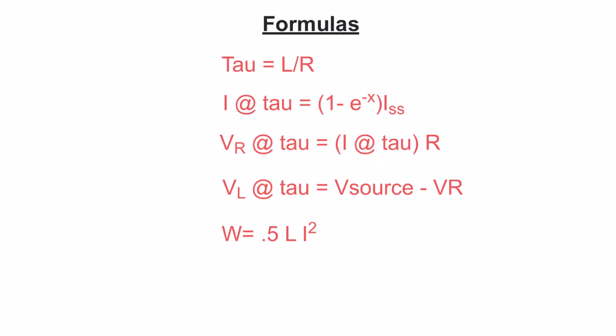For the voltage at the resistor at a certain time constant, we take the current worked out at that tau and multiply it by R using Ohm's law to get the resistor voltage. For the voltage at the inductor — V of L at that tau — we can't use current directly. We subtract the resistor voltage from the source voltage, because Kirchhoff's law must apply.